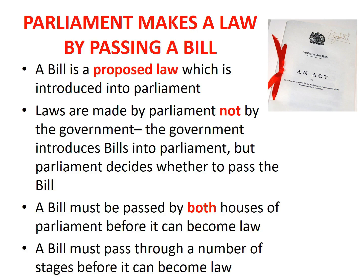A bill must be passed by both houses of Parliament before it can become a law. If the bill is a proposed law for Australia, it will be introduced into the Commonwealth Parliament, and must be passed by both the House of Representatives and the Senate. If the bill is a proposed law for Victoria, it will be introduced into the Victorian Parliament and must be passed by both the Legislative Assembly and the Legislative Council.